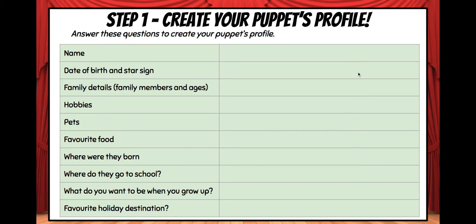You need to come up with a name, a date of birth, and star sign — you might need to research the star sign. Then create family details including family members and ages, hobbies, pets, favourite food, where they were born, where they go to school, what they want to be when they grow up, and their favourite holiday destination.